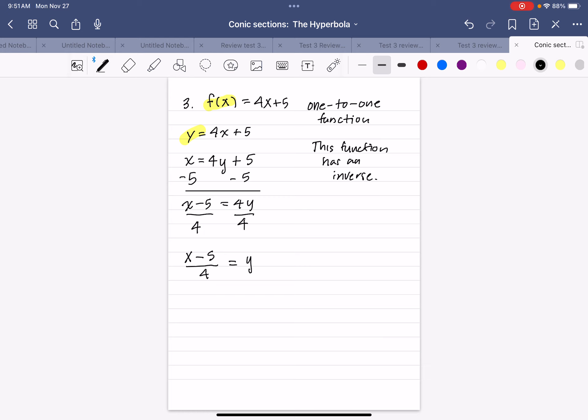Now since this is the inverse of f(x), we're going to write it f inverse of x. That's what the little negative one means. It means an inverse. So it's (x - 5)/4.